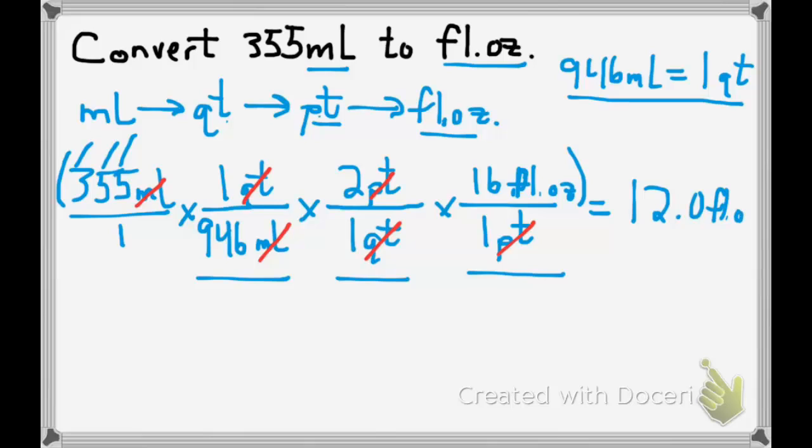The next time you drink a can of soda, look at the volume on the bottom — it says 12 ounces, but it should also say 355 milliliters.